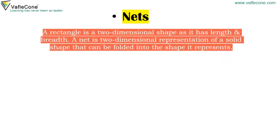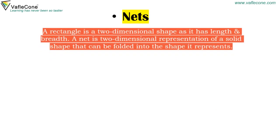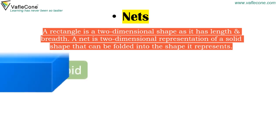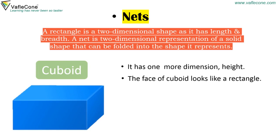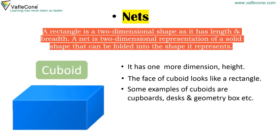A rectangle is a two-dimensional shape as it has length and breadth. A net is a two-dimensional representation of a solid shape that can be folded into the shape it represents. Cuboid — it has one more dimension: height. The face of a cuboid looks like a rectangle. Some examples of cuboids are cupboards, desks, and geometry boxes.